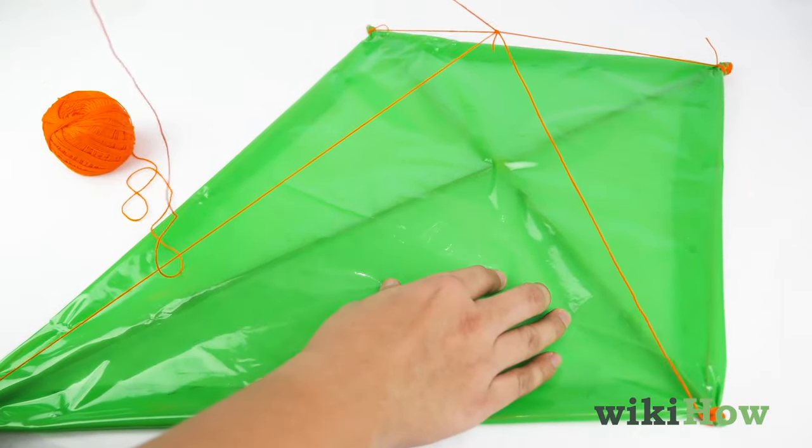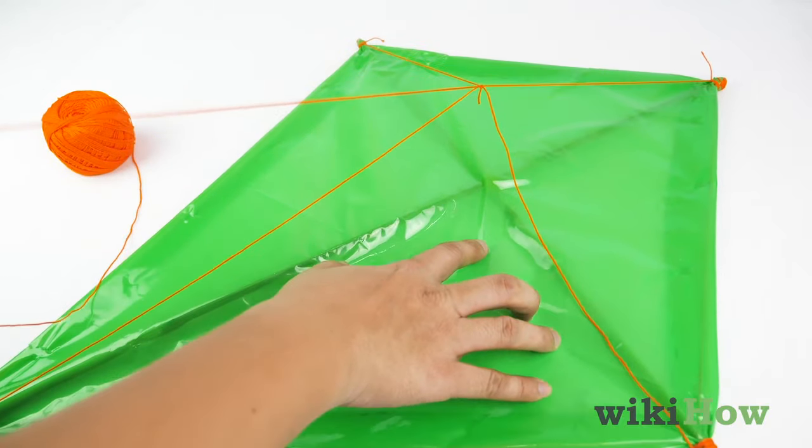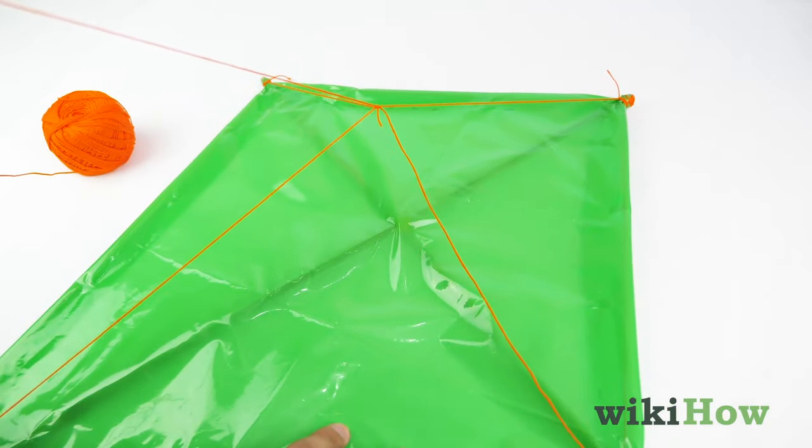Finally, tie the two lengths of string to a third piece of string at the junction where the two strings meet to make your bridle and line.